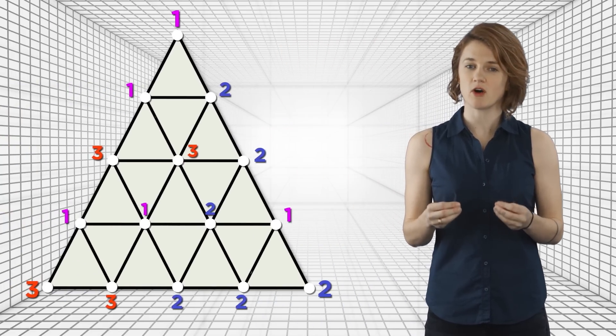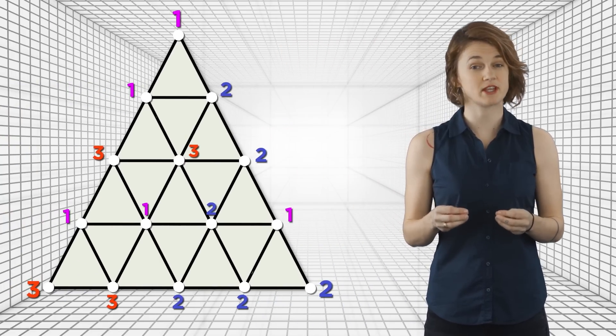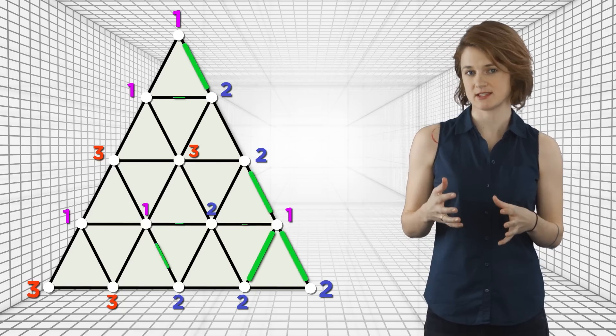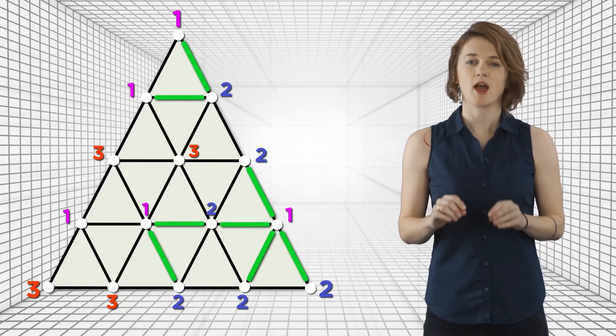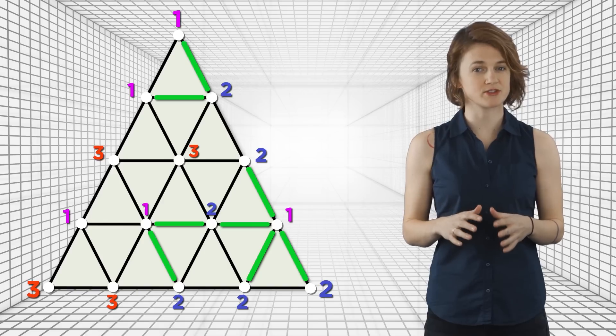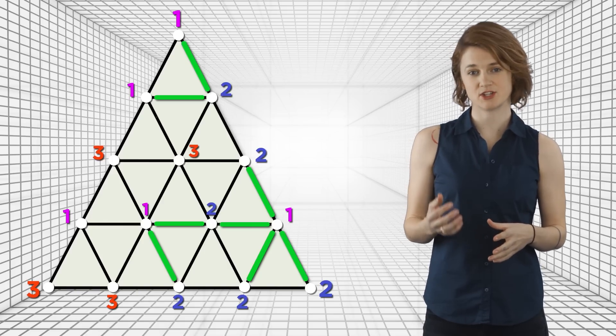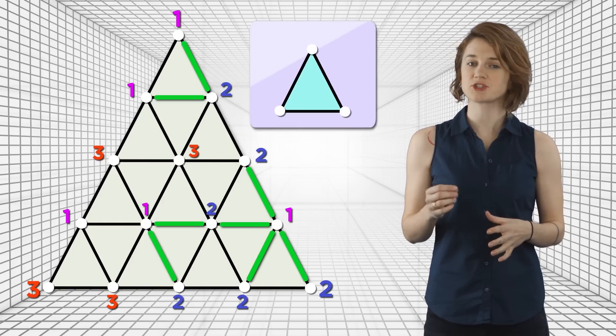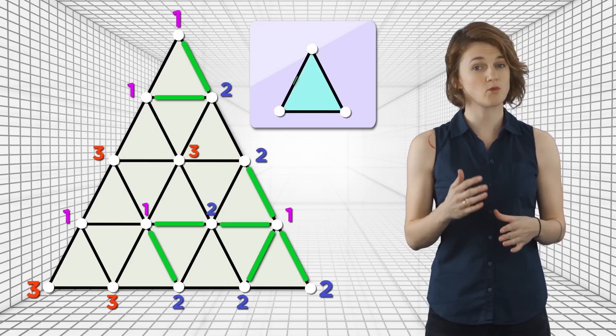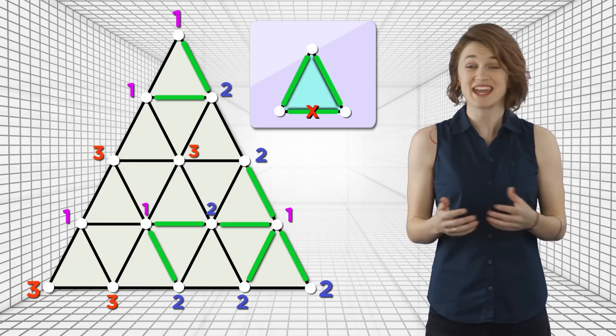Here's a procedure for finding one. First, pick any two numbers from the options 1, 2, 3 — either 1 and 2, or 2 and 3, or 1 and 3. Let's pick 1 and 2. Color green all the edges whose vertices are labeled 1 and 2. Now, imagine that all of the small triangles are rooms, and the green edges are doors.